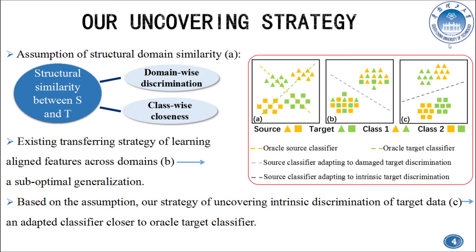Although existing transfer strategy of learning aligned features across domains has achieved impressive results, it has a potential risk of damaging intrinsic structures of data discrimination on the target domain, as illustrated in sub-figure B. To address it, we propose the assumption of structural domain similarity, including domain-wise discrimination and class-wise closeness, as illustrated in sub-figure A.